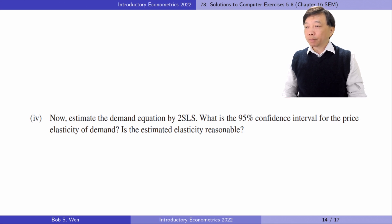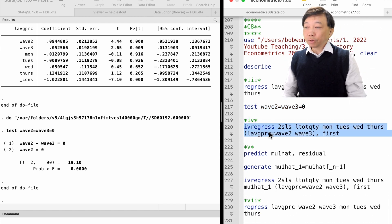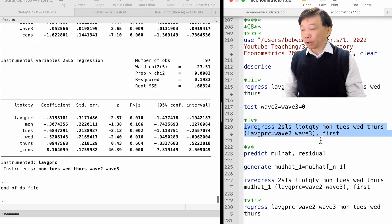In part 4, we will estimate the demand equation by two-stage least squares. What is the 95% confidence interval for the price elasticity of demand? Is the estimated elasticity reasonable? Using the two wave variables as instrumental variables for the price, the two-stage least squares estimate of the price elasticity of demand is minus 0.816. The estimated elasticity is reasonable. A 10% increase in the price leads to an 8.2% decrease in demand, holding other factors constant. The 95% confidence interval is wide from minus 1.44 to minus 0.19.